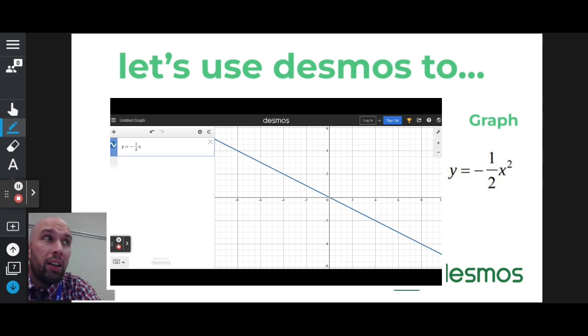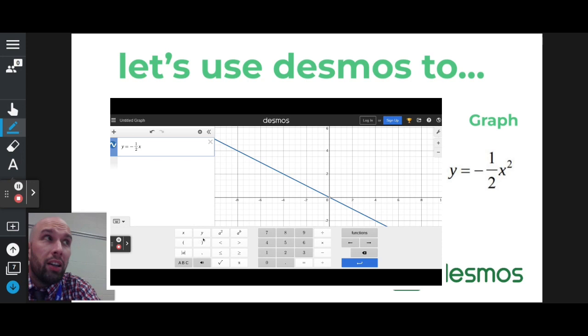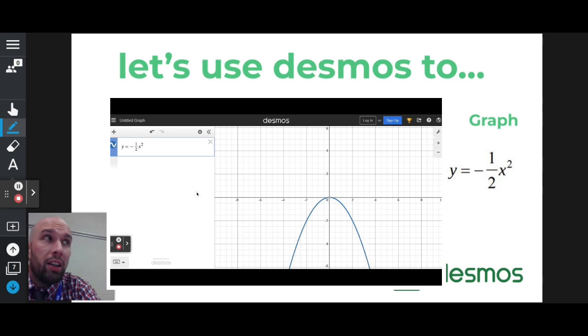Now, there's two ways that I can add the quadratic part to this. I can click on the keyboard and hit second. Or the other way you could have done it is hold down shift, hit six, and that would allow you to do it right there.